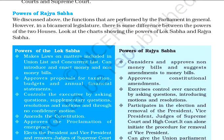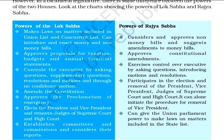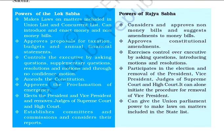Now let us compare the powers of Rajya Sabha and Lok Sabha. First, the powers of Lok Sabha: Lok Sabha makes laws on union list and concurrent list matters. It can introduce and enact money and non-money bills. It also approves taxation, budgets, and annual financial statements.